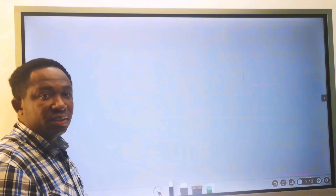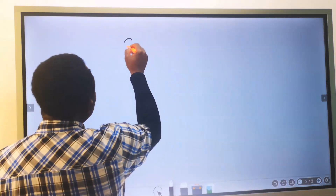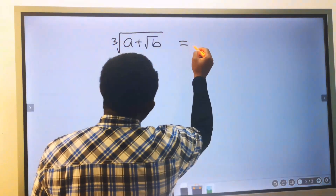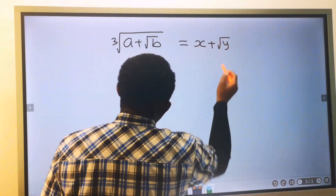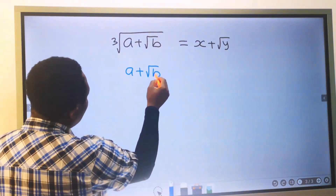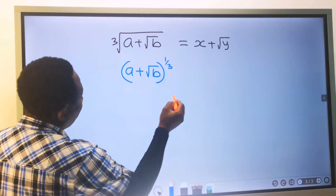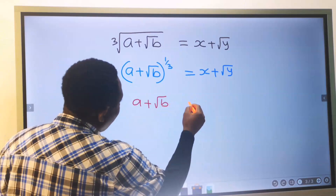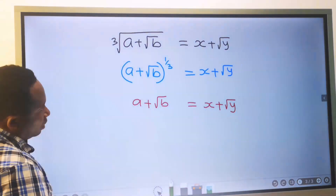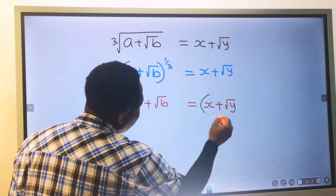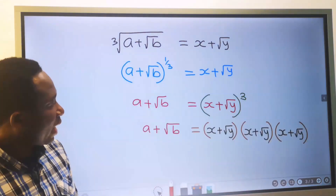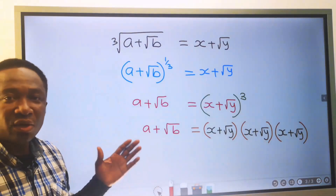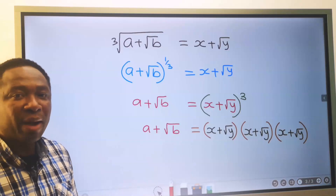Before we solve some questions, it is important to note that if we have a plus the square root of b, all cube root, and our answer is represented as x plus the square root of y, this can be written as a plus the square root of b, all to the power of 1 over 3, equals x plus the square root of y. Next, if you remove the cube root, the other side becomes raised to the power of 3, meaning we expand this bracket 3 times by distribution. This is always the second step when solving the cube root of a binomial quadratic surd.